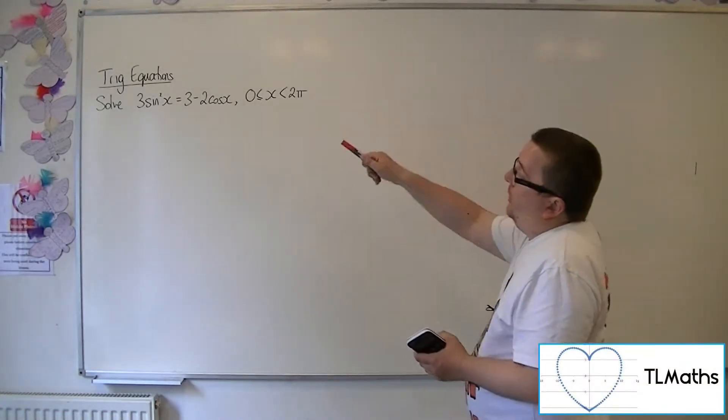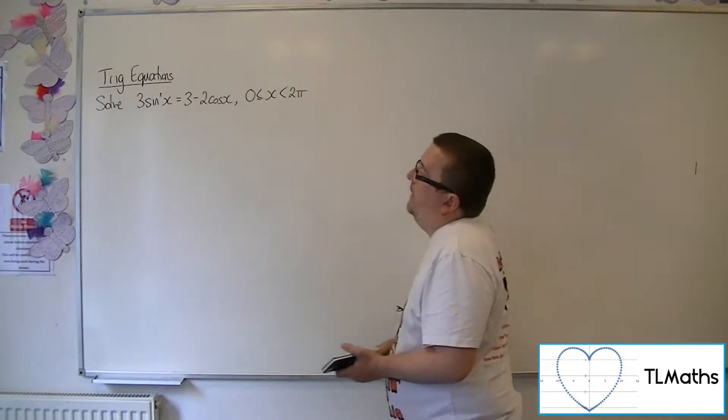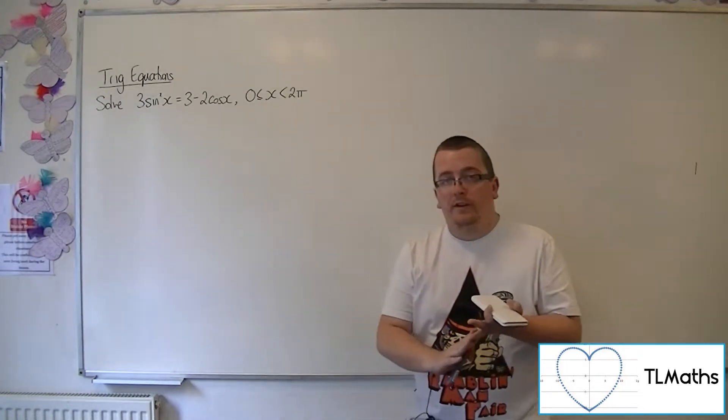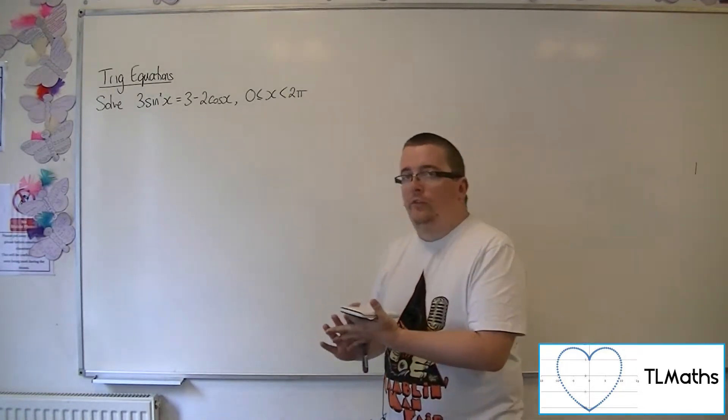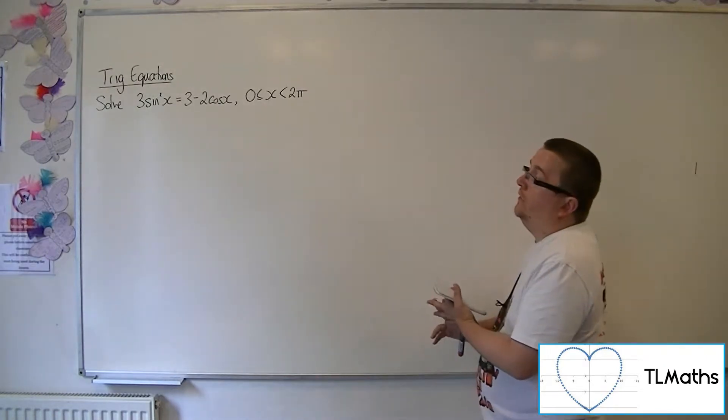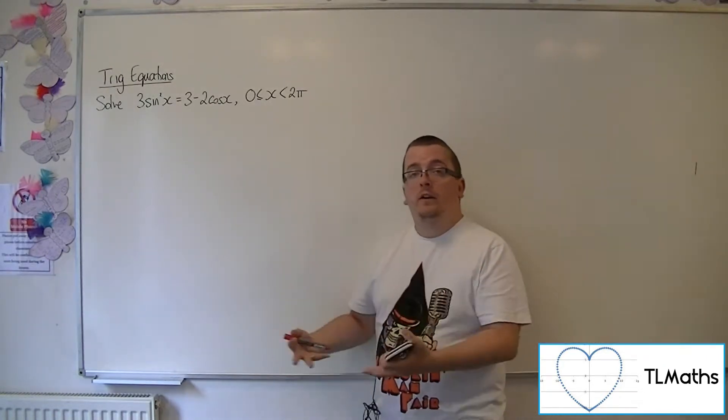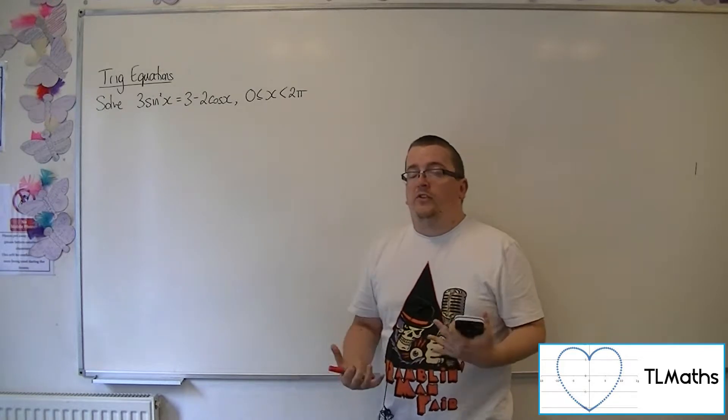Because I have a quadratic that has both sine and cosine, I need to think about using one of the trigonometric identities in order to get it just in terms of sine or just in terms of cosine.